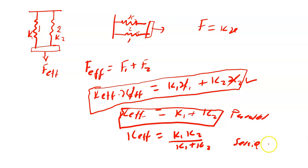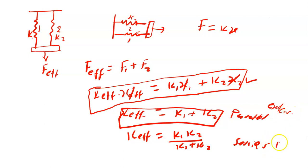For a recap, the effective spring constant for series connection is k1 multiplied by k2 over k1 plus k2. So for parallel connection the assumption is the same extension, and for series connection the assumption is that the force is the same.